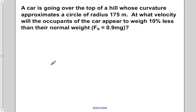A car is going over the top of a hill whose curvature approximates a circle of radius 175 meters. At what velocity will the occupants of the car appear to weigh 10% less than their normal weight? Fn is equal to 0.9 mg.